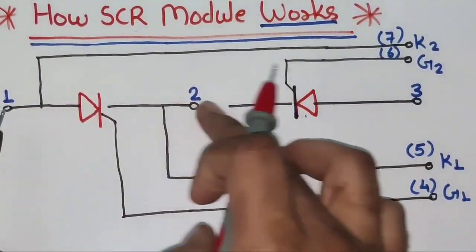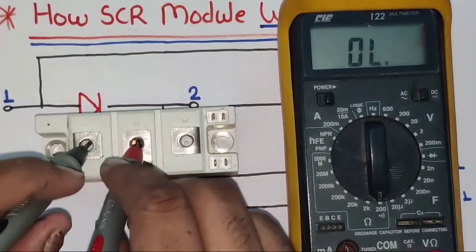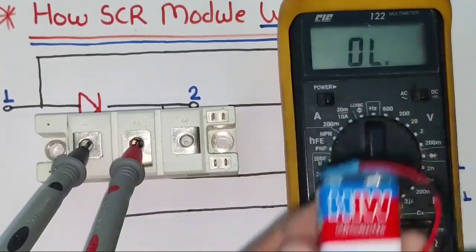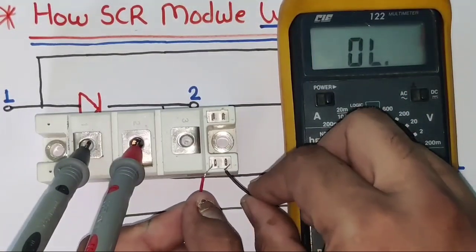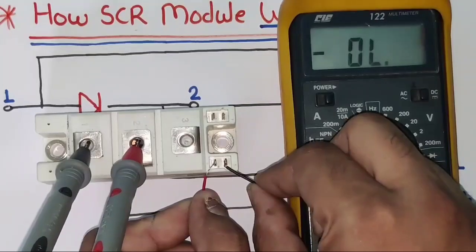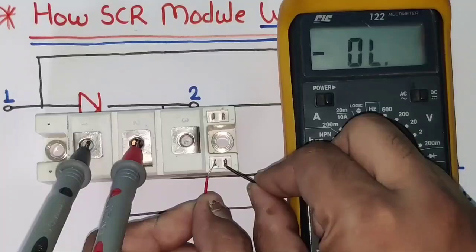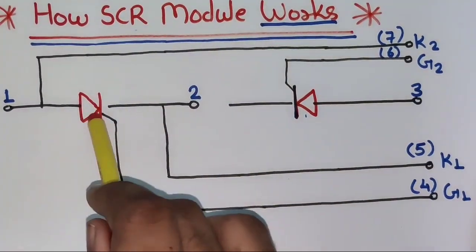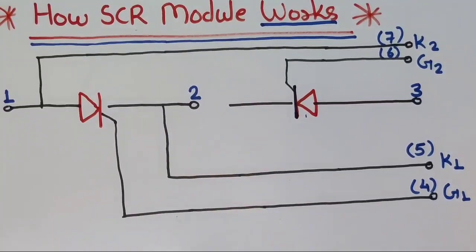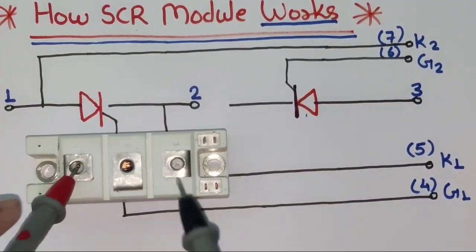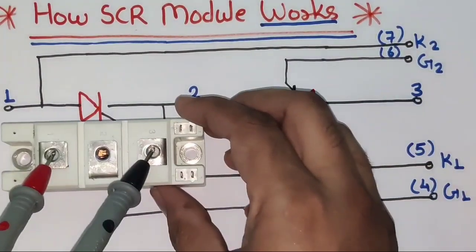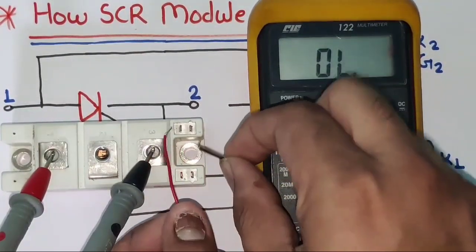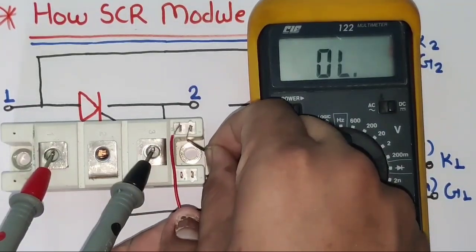Now let's understand how it works. Between terminals 1 and 2, no resistance should show — open loop. But when we provide a gate pulse using a 9 volt battery — connecting positive to terminal 4 and negative to terminal 5 — the gate pulse is connected and terminals 1 and 2 show shorting, continuity is showing. Same concept: when we provide pulse to terminals 4 and 5, conduction between 1 and 2 will start, because the SCR operates by receiving a gate pulse. Same concept for the second SCR — between 1 and 3 in normal condition, no resistance shows, it is showing open loop. When you provide gate pulse between terminals 6 and 7, it should show continuity.